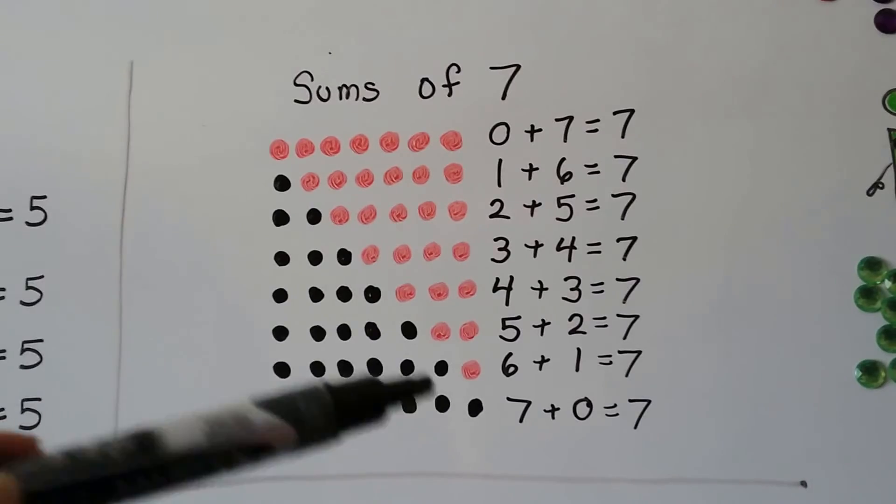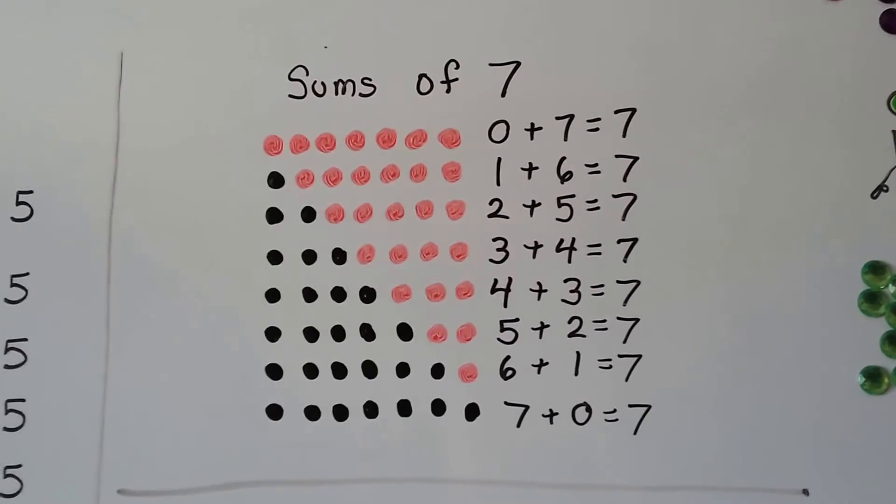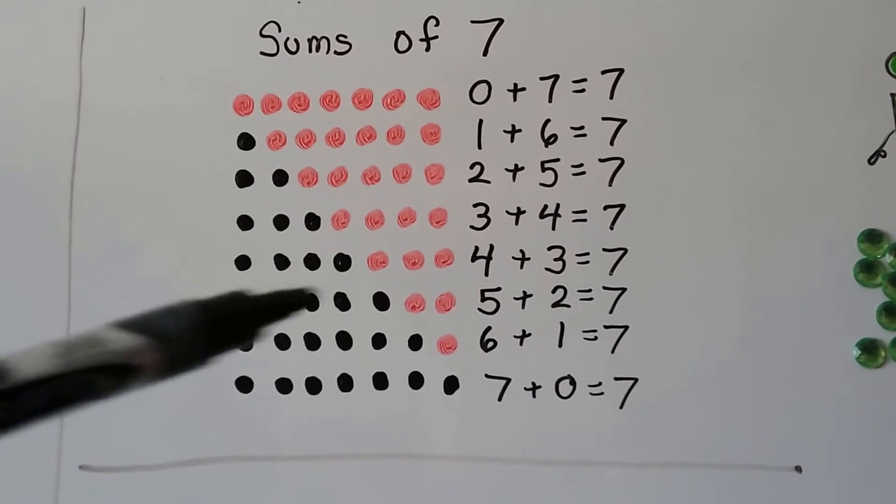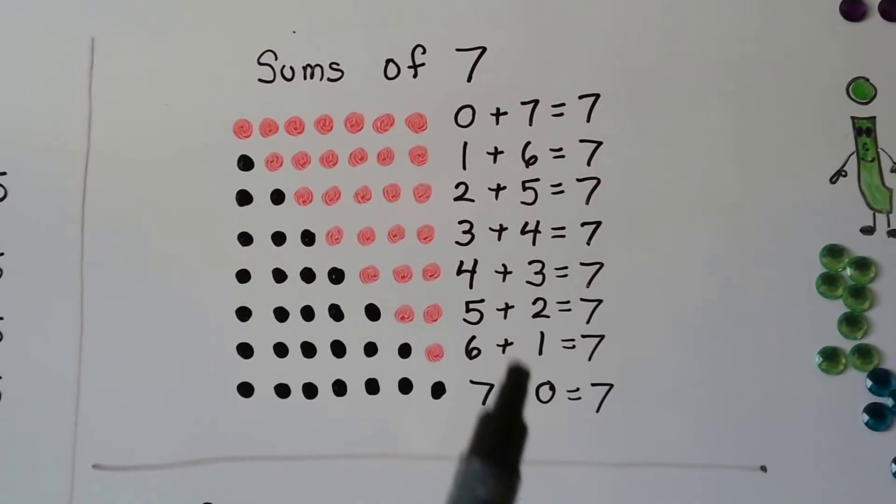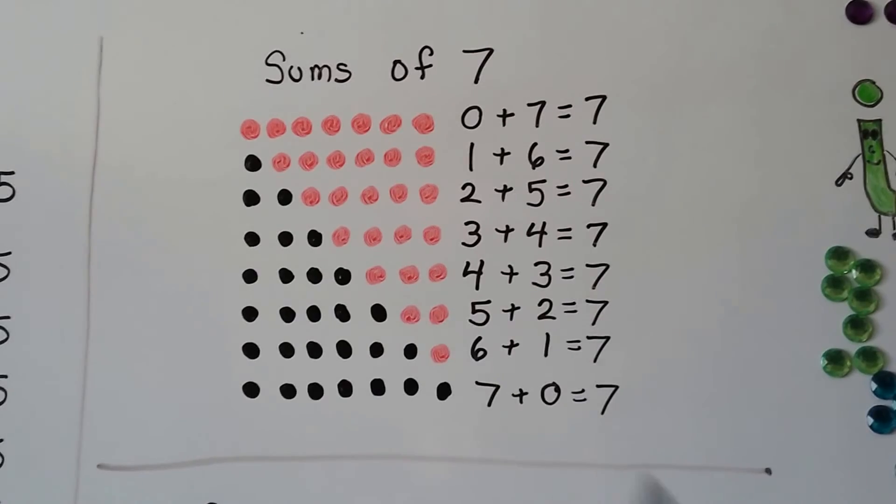And it goes down in a pattern. And as the black ones increase, the pink ones go down and decrease. But they still all equal seven. See? So these are all the addends that would make a seven.